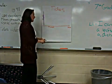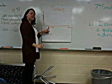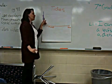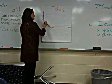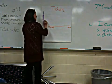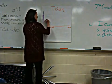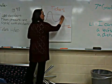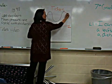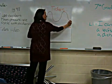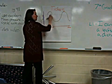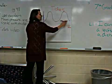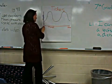If we were to map the time of day with the height of the water, we would see something that looks like this: high tide, low tide, high tide, low tide. In 24 hours, we have two high tides and two low tides.